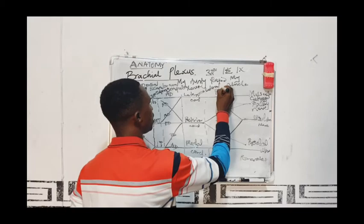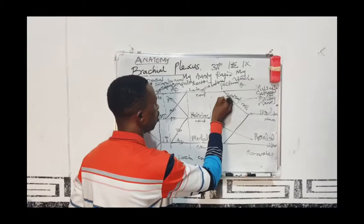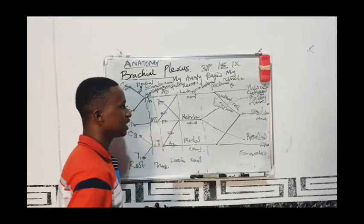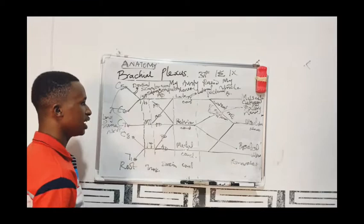The lateral cord also gives rise to a branch called the lateral root of the median nerve. Combined with the medial root, both of them give rise to the median nerve. Next, the posterior cord gives rise to five branches.